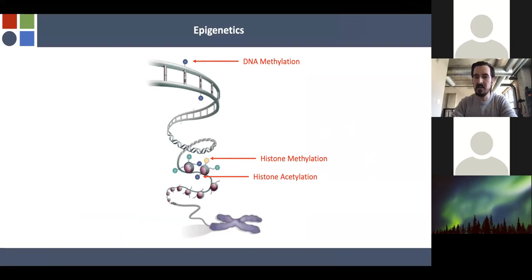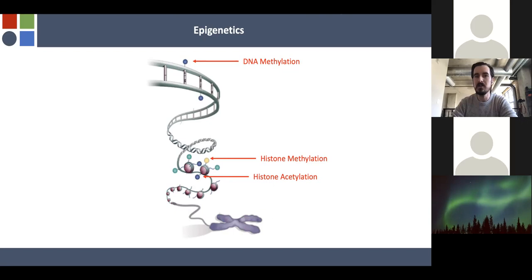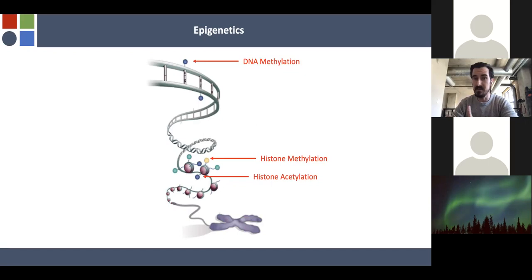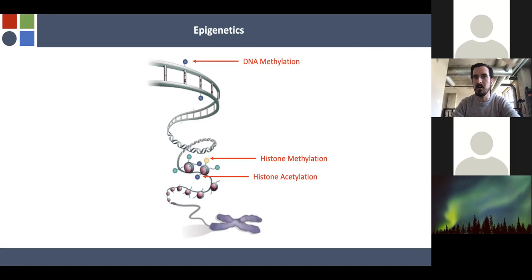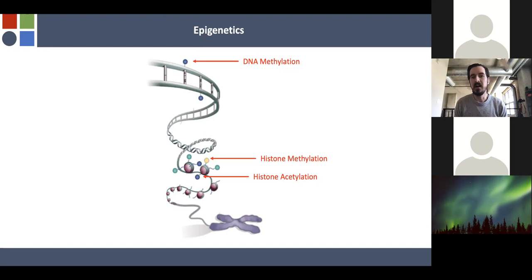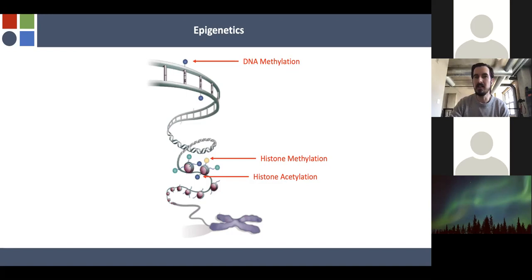Just a little background on epigenetics. Three main mechanisms control gene expression: DNA methylation, which is a silencing mark; histone methylation, where an octamer of proteins that DNA wraps around has methylation of tail residues controlling expression — this is a mixed bag depending on the type of methylation and residue; and histone acetylation, which is pretty straightforward. Acetylation of histone tails is a gene-permissive state — it generally associates with transcriptional activation of the associated gene region.